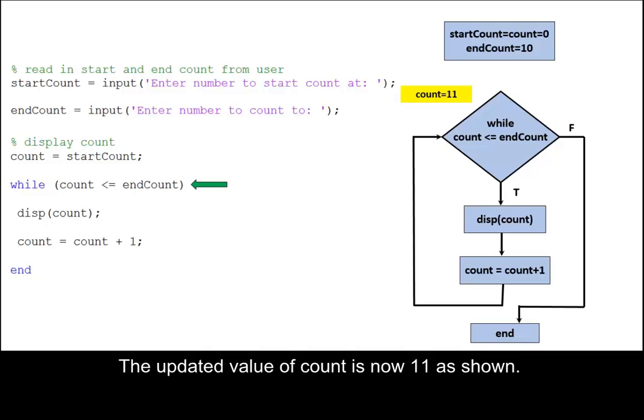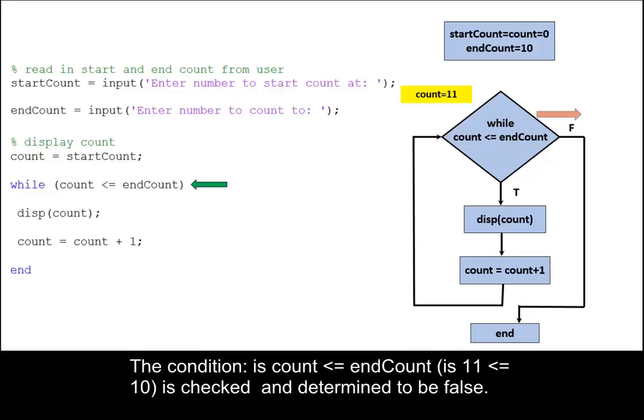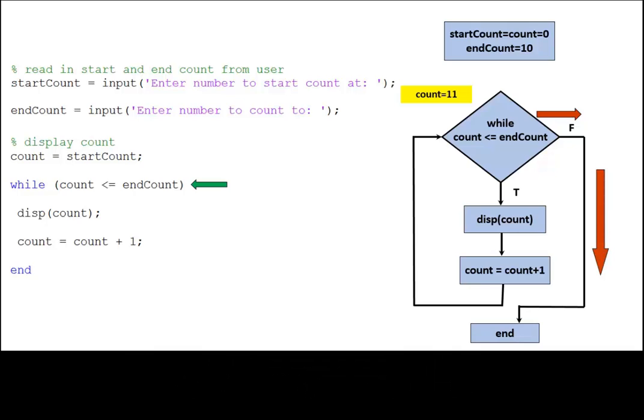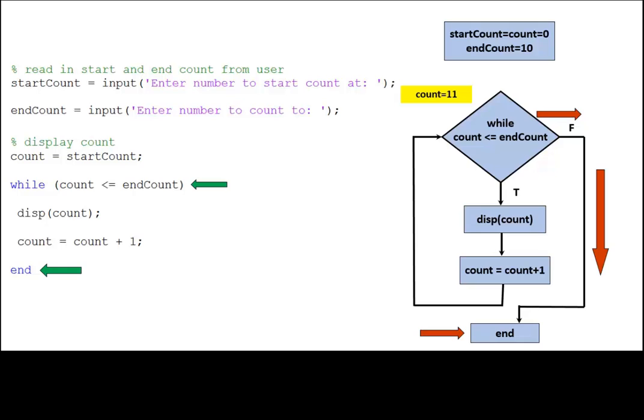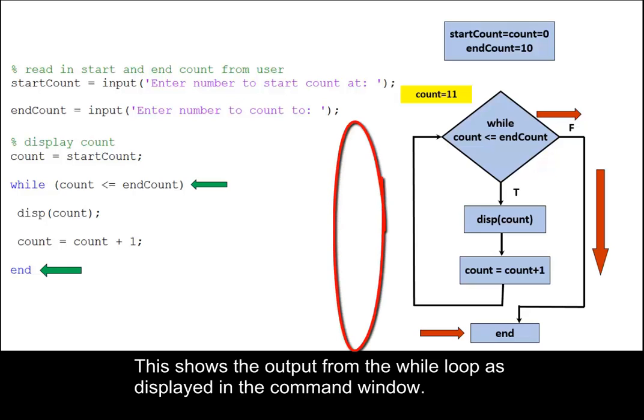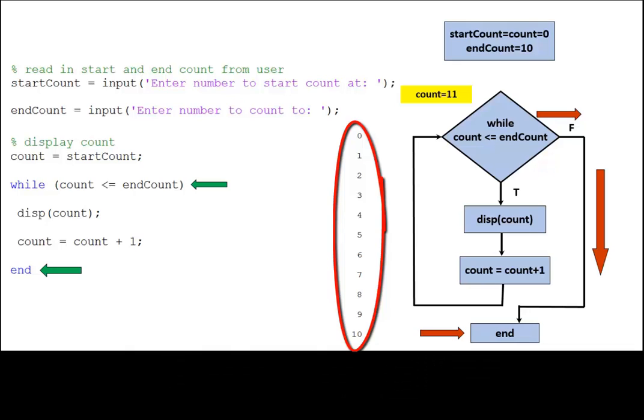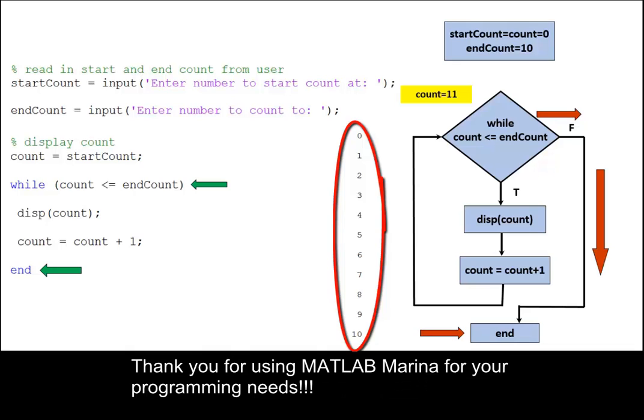The updated value of count is now eleven, as shown. The condition 'is count less than or equal to endCount' is checked and determined to be false. The while loop ends. None of the statements within the loop are executed. This shows the output from the while loop as displayed in the command window. Thank you for using MATLAB Marina for your programming needs.